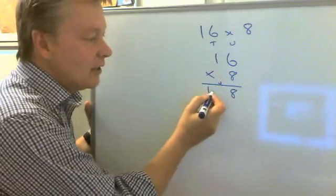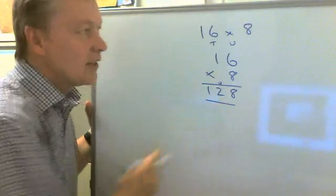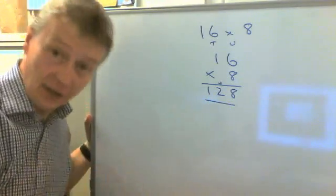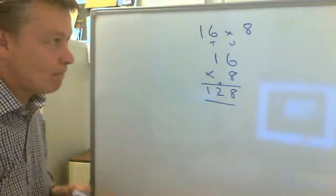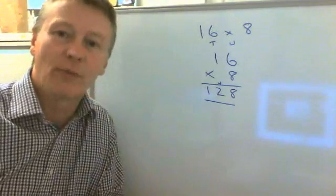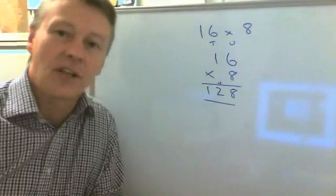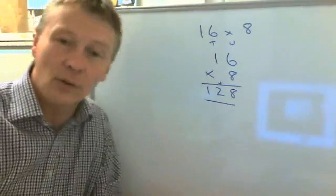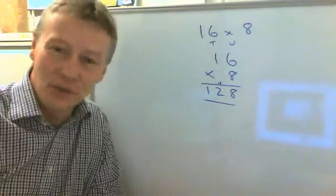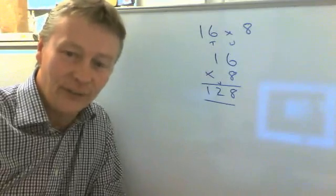is 12. So the answer to 16 times 8 is 128. There is another way of doing this which is called the partition method. So if you go to the next video, that will tell you how to do exactly the same calculation but using a slightly different way of doing things.